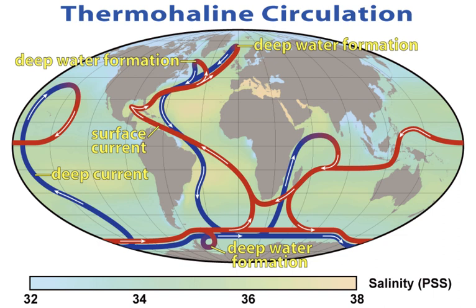Extensive mixing therefore takes place between the ocean basins, reducing differences between them and making the Earth's oceans a global system. On their journey, the water masses transport both energy in the form of heat and mass of substances around the globe. As such, the state of the circulation has a large impact on the climate of the Earth.